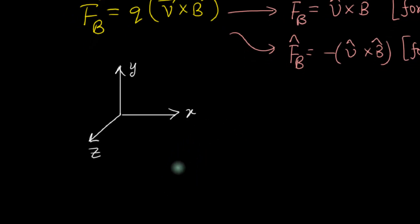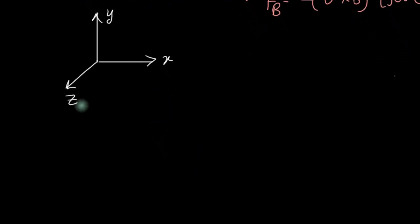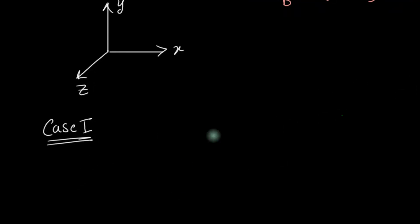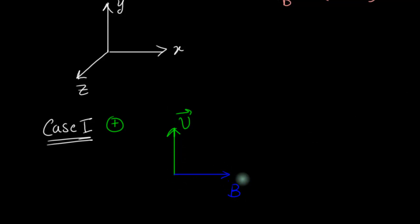Without any further ado, let's take some cases and work out the direction of the magnetic force. Case one: a positive charge moving upwards with velocity v, and at that point the magnetic field is towards the right. The question is, what is the direction of the magnetic force acting on this charge? In other words, what's the direction of v cross B?